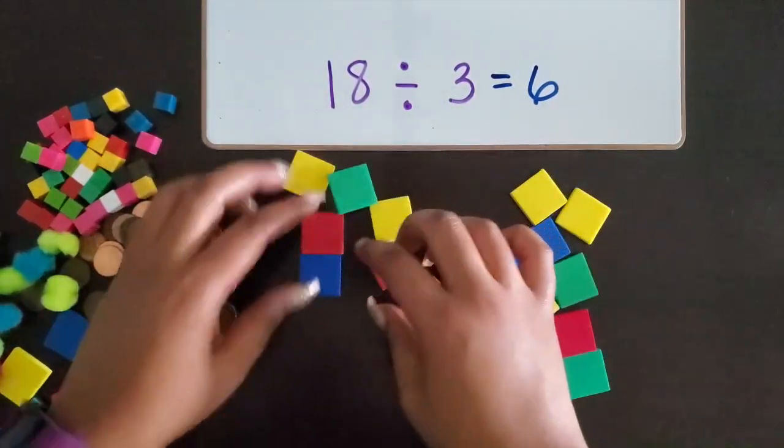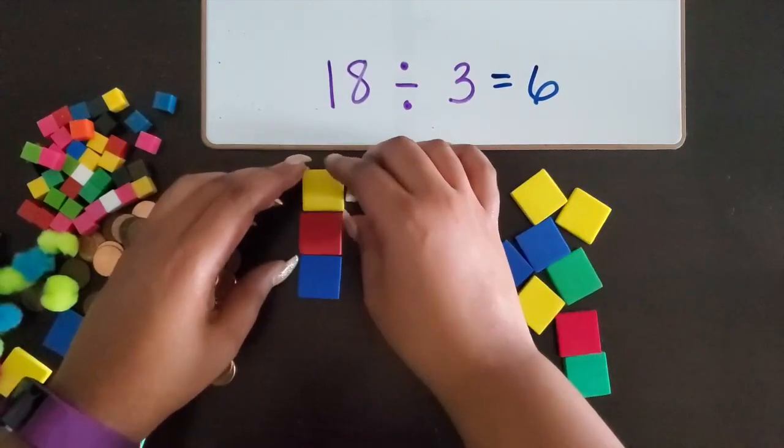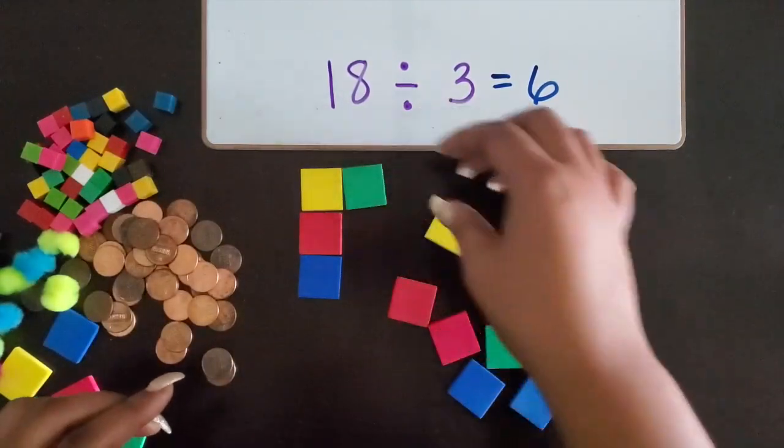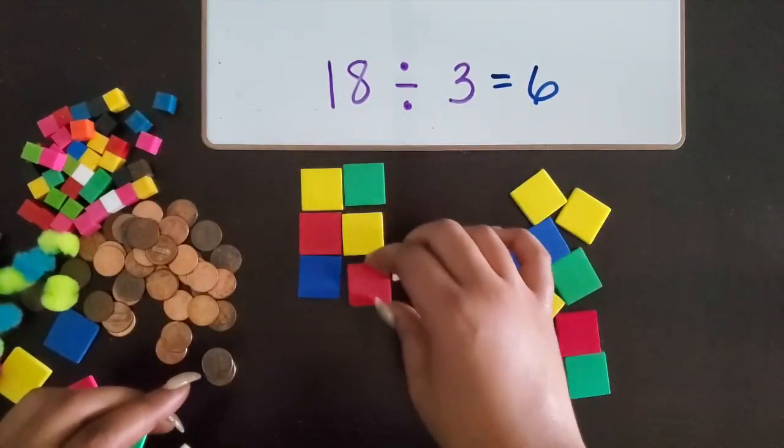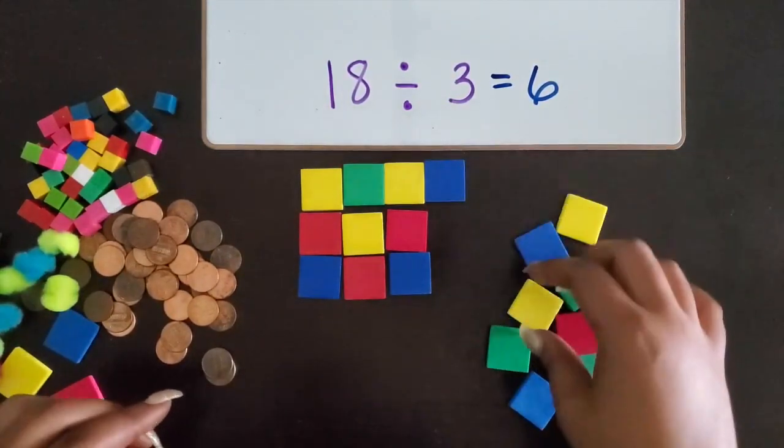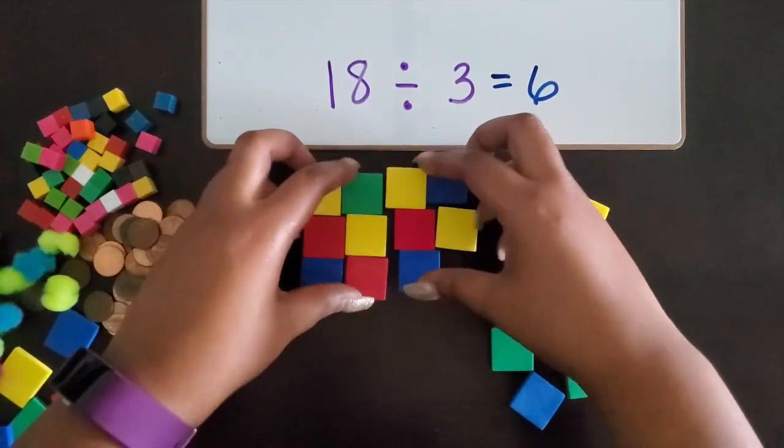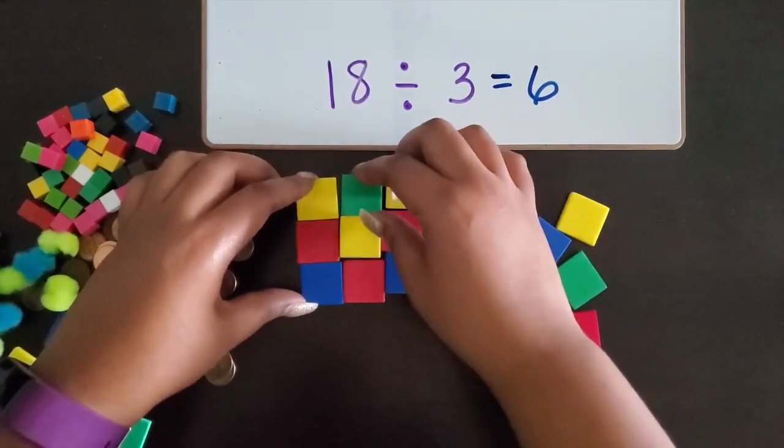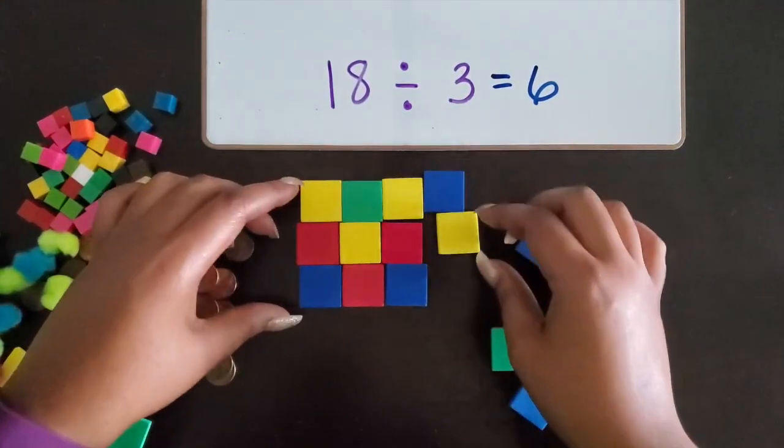So if I have three square units long, I need to figure out how many square units wide the area is. So I want to make sure there's no space or no gaps between my square units.